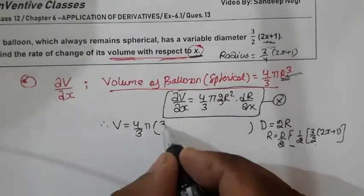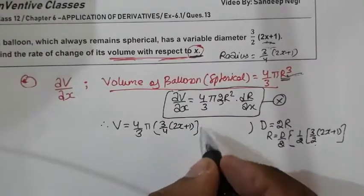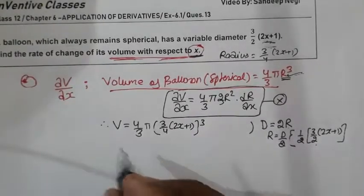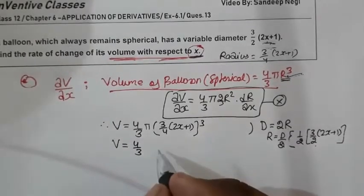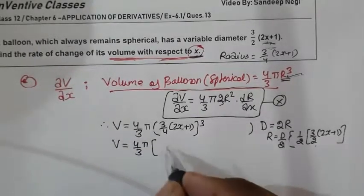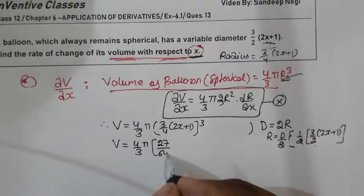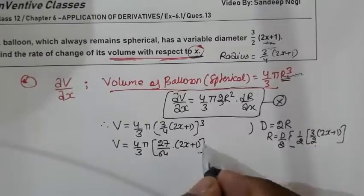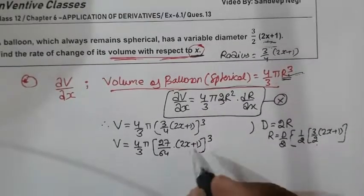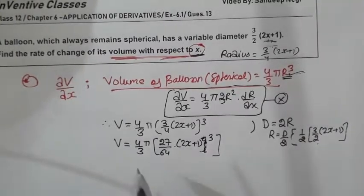So here you can put 3/4(2x+1) whole cube. Further solve: 4/3 pi, 3 by 3, cube is 27, 4 cube is 64, and here 2x+1 cube, 2x+1 cube cube. Now when you have differentiated it with respect to x.